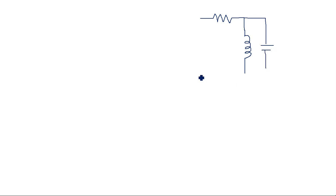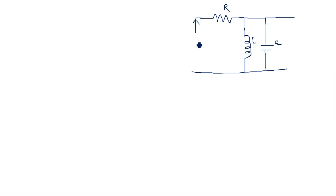This circuit can also be drawn in another way: the series resistance is in series, whereas the tank circuit made up of an inductor followed by a capacitor — these two are connected in parallel. The same circuit can also be drawn in this way. This is where we are applying the input voltage, this is where we are taking the output, and this is the current flowing through this.